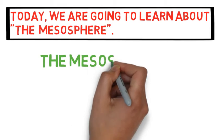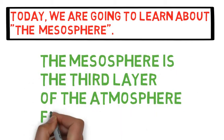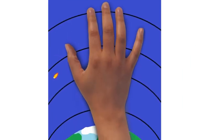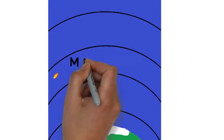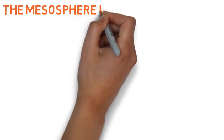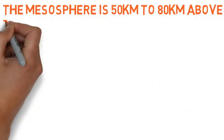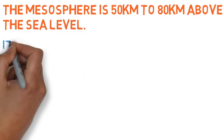The Mesosphere is the third layer of the atmosphere from the Earth. It is located 50 km to 80 km above sea level.